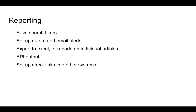In terms of creating reports, we can save search filters, set up automated email alerts, export data into Excel or reports on individual articles, have an API output for those who can work with APIs, and set up direct links into other systems. Altmetric data can appear within your university library catalogue if you have the technology to do that, so we can see publications and their altmetric data.